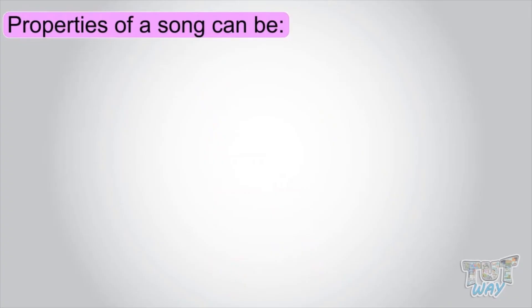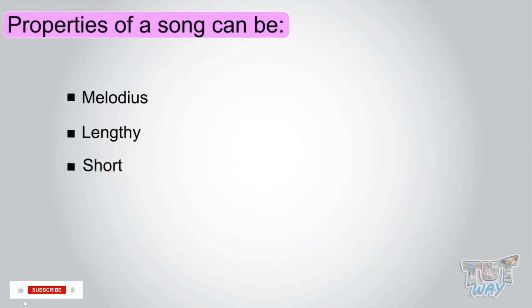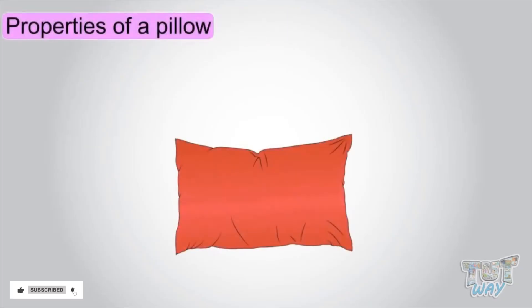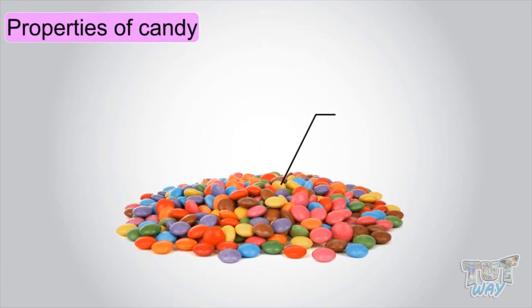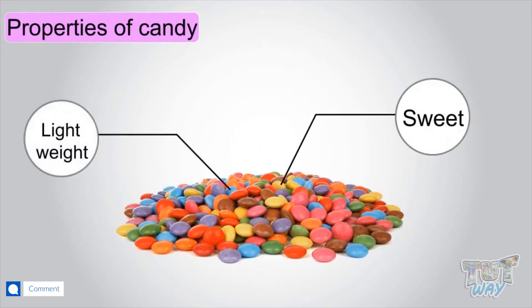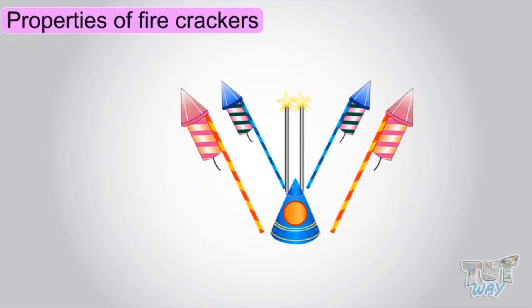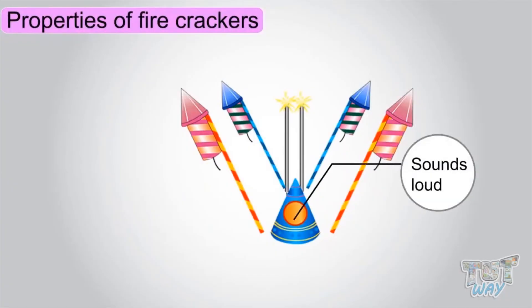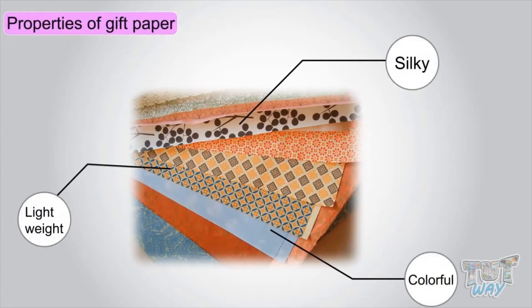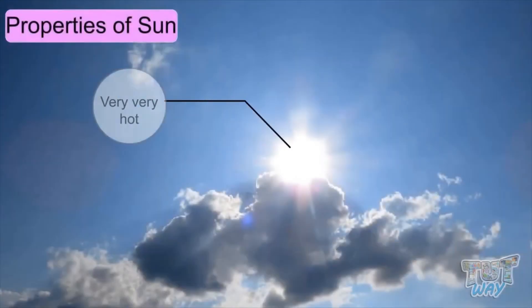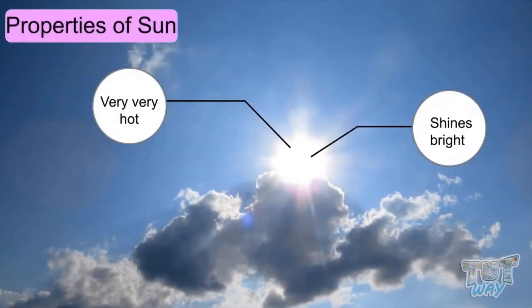Now let's see what the properties of a song can be: melodious, lengthy, or short. Properties of a pillow: soft and lightweight. Candy: sweet and lightweight. A cracker sounds loud. Gift paper: silky, colorful, and lightweight. The sun: very, very hot, shines bright, and is very far.